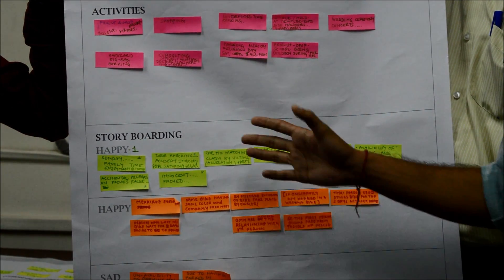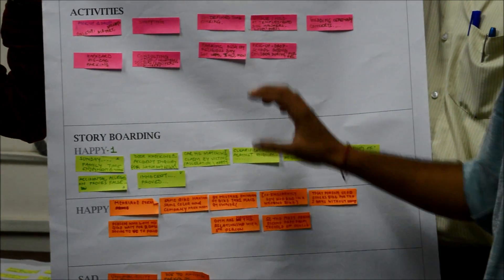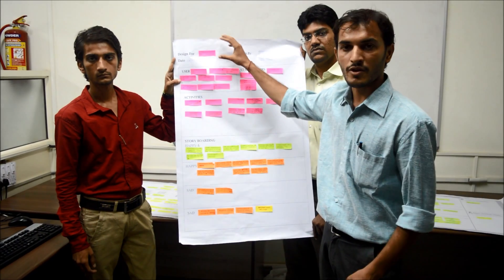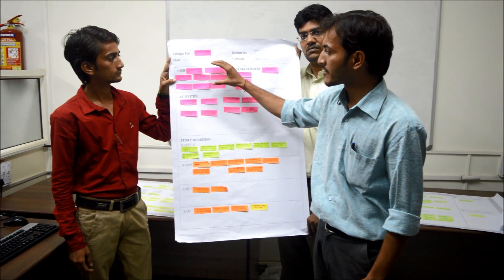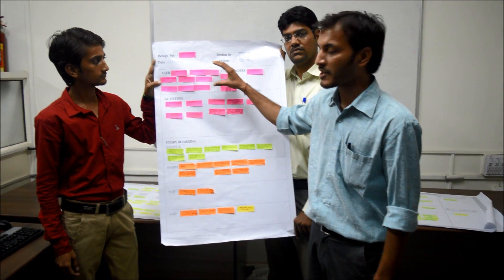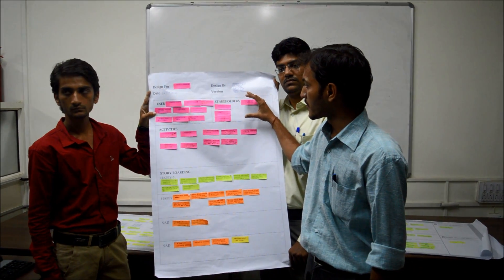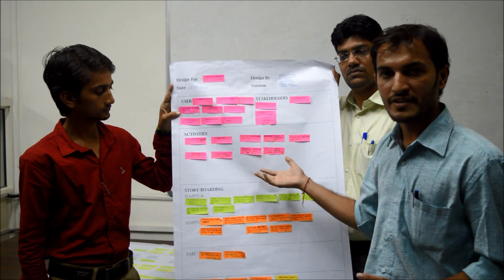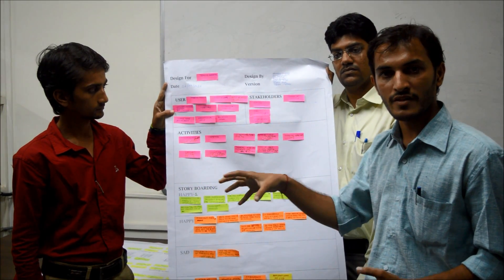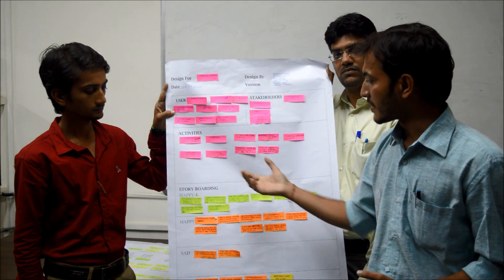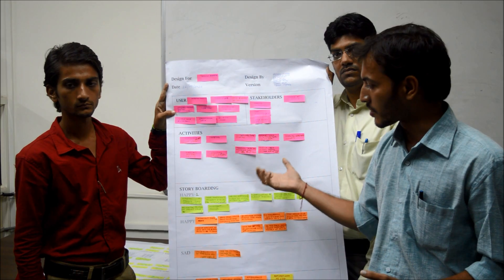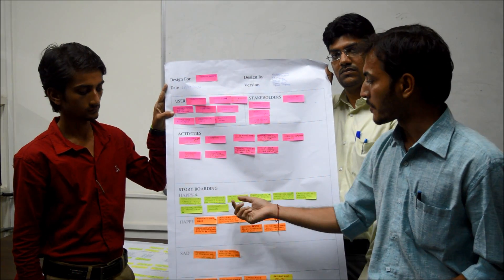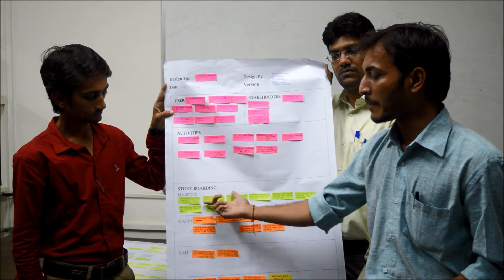So in this user canvas, we have first defined the problem — vehicle parking. Next is the user, directly affected by the problem. Next is stakeholders, indirectly connected with it. And next is activities relevant to the problem in parking areas. Then, to get into the emotions and feelings of the problem, we have storyboarding — happy and sad.